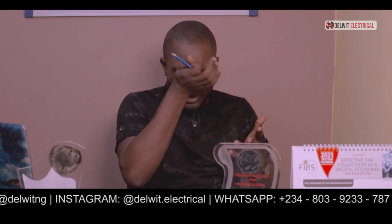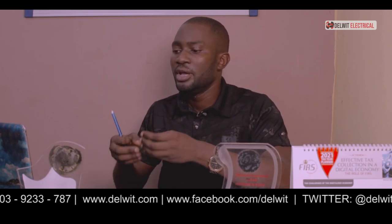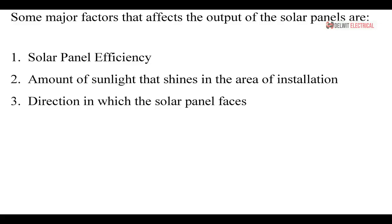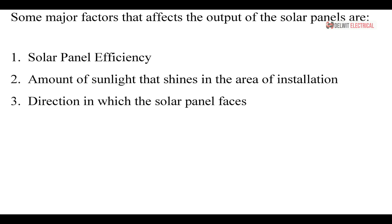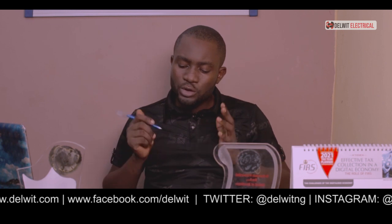There are some factors to take into consideration when sizing your panel. First is the solar panel's efficiency — how efficient the panel is. You can find this on the data sheet of every panel and it is required in your calculation. Second is the amount of sunlight that shines in the area of installation — there is a site you can visit to check the number of sunlight hours you get on a daily basis. Third is the direction in which the solar panel faces, since the sun rises from the east and sets in the west, so you need to know which direction to face your panel to attract maximum sunlight.